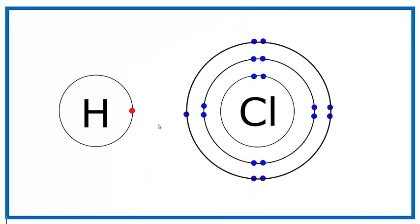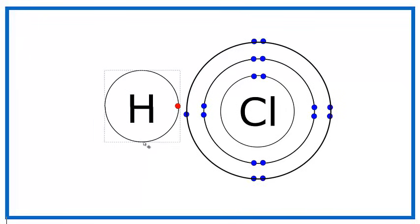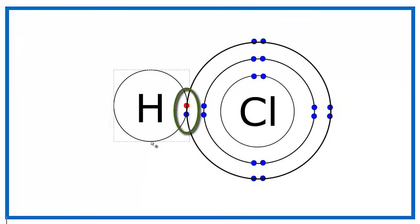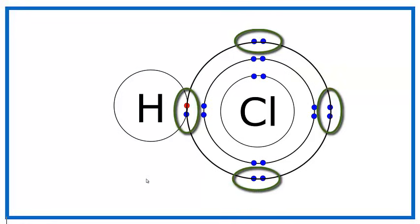So here we have hydrogen forming a chemical bond with chlorine by sharing electrons. The hydrogen has one electron, and it shares that with chlorine, which has seven electrons in its outer shell. Once they form the bond, hydrogen now has two valence electrons, and chlorine has eight, an octet.